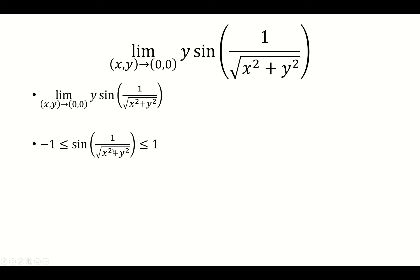We know that sine is between negative 1 and 1, so if we multiply it by y, we have y sine of 1 over the square root of x squared plus y squared is between negative y and y.